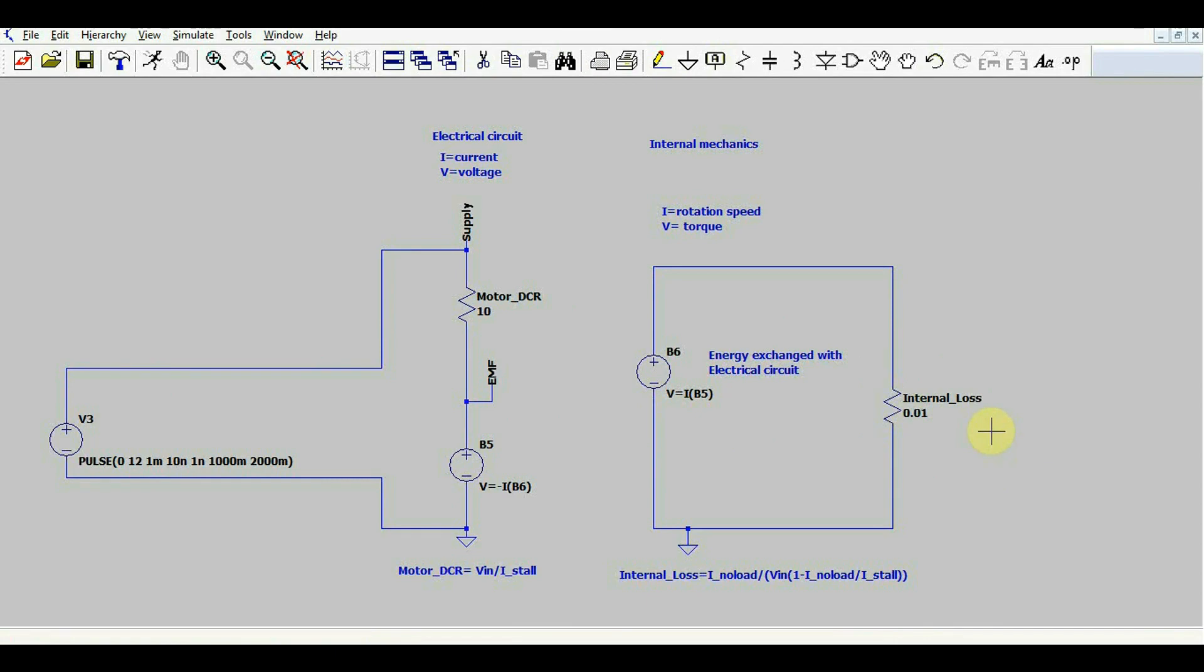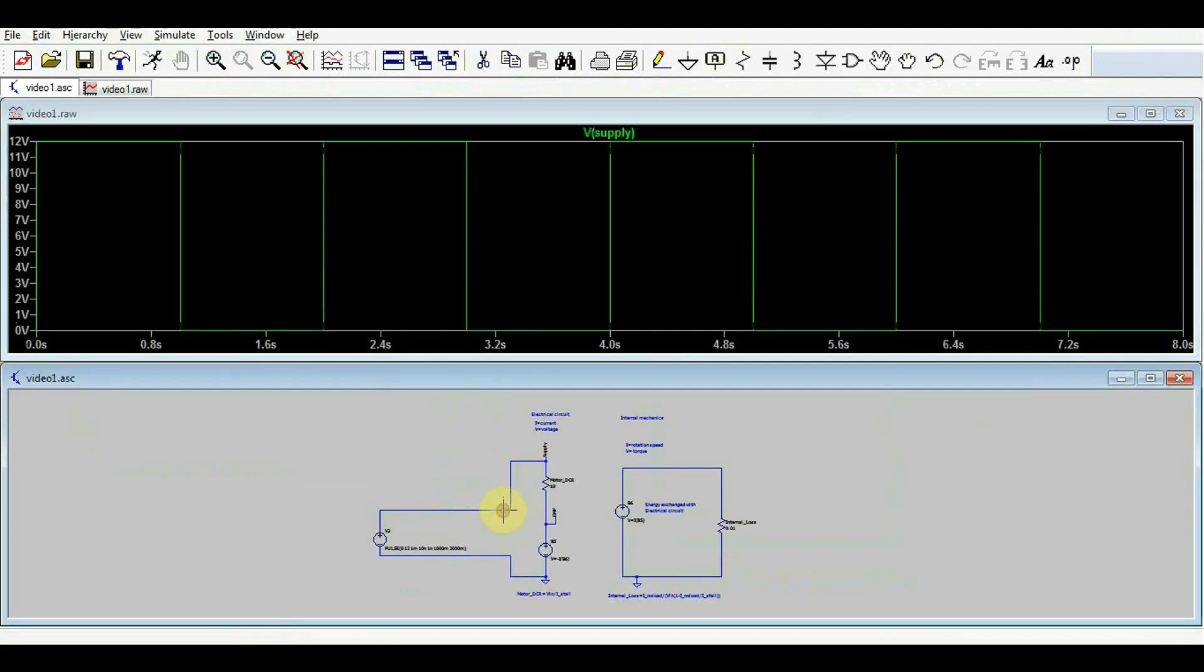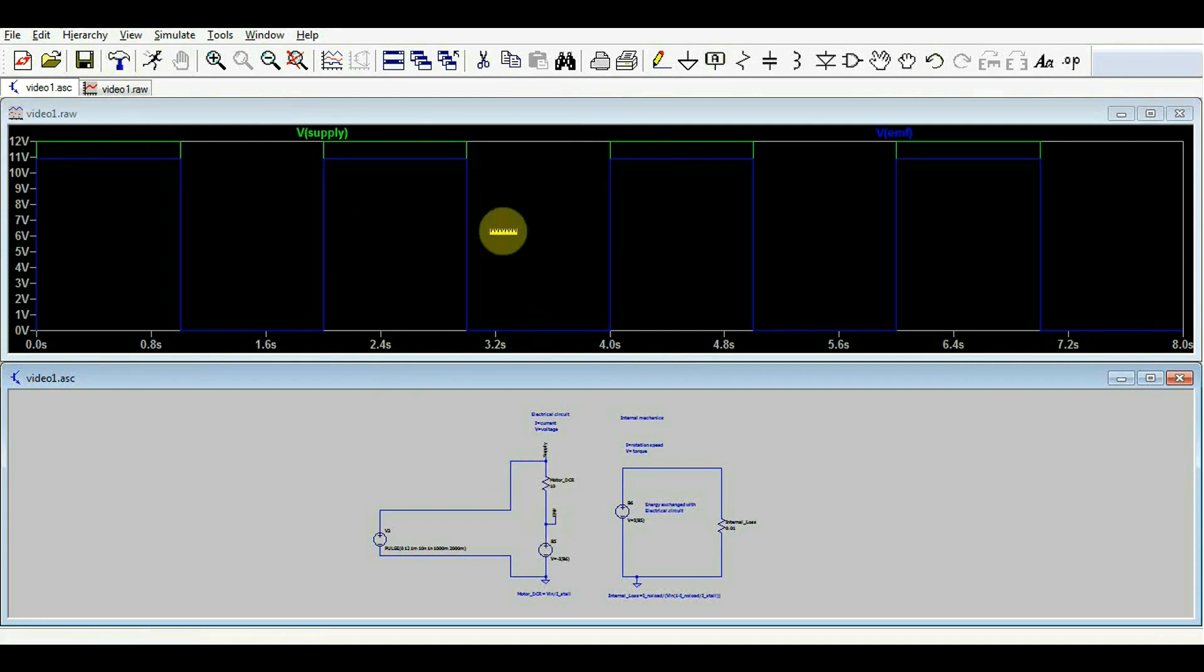And then we got another resistor to represent our internal loss. Now, if we run this, we will see that although we have a nice 12 volt supply, our EMF voltage, so the energy stored inside the motor, is a bit lower. And this value will be proportional to the internal loss.